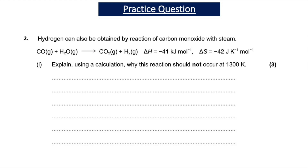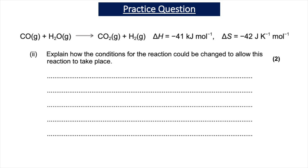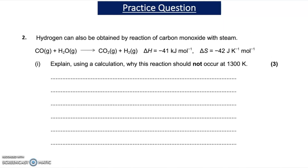Our second practice question comes in two parts. In the first part, we have a chemical reaction involving carbon monoxide and steam. The question asks: explain using a calculation why this reaction should not occur at 1300 Kelvin. Pause the video and have a go at the question before we go through the answer.